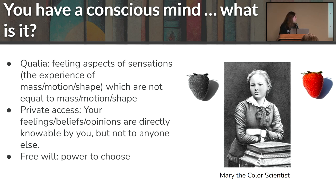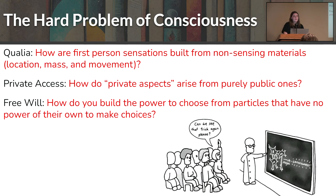And then the final problem of consciousness is free will. Most people are more familiar with this, or in other words, the power to choose. Of course you can deny any of these three, but they're what's considered the hard problem of consciousness. And essentially it's a contradiction with what these things are and what we would suppose they would be if material was all there was. So the first being qualia, how do you build first-person sensations from non-sensing materials like location, mass, and movement? Second problem, how do you build private aspects from things that are purely public? And then the third problem would be how do you build power to choose from particles that inherently do not have a power of their own to make choices? I'm a chemist, I know that very well. At least I never assumed they have choices. That would be really scary for my profession if I did.